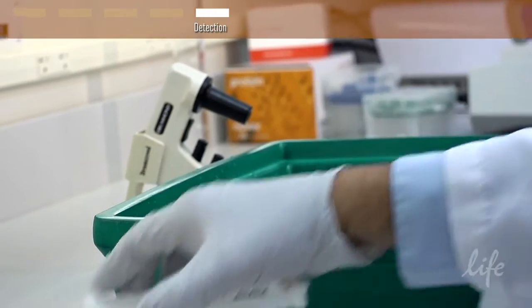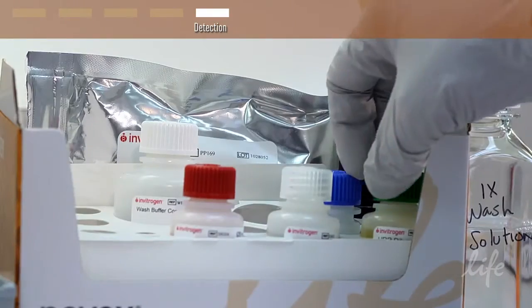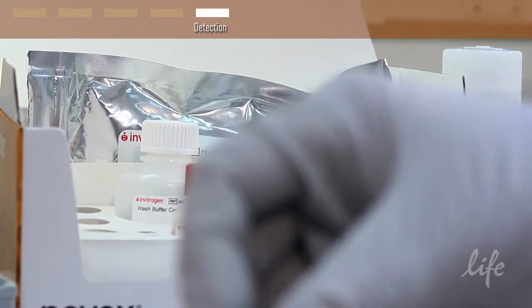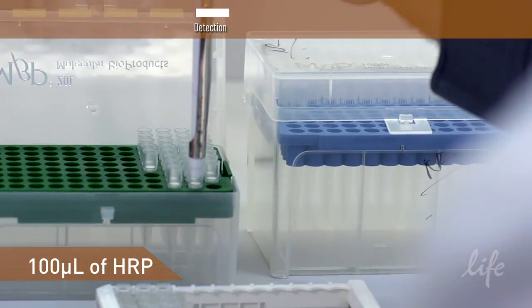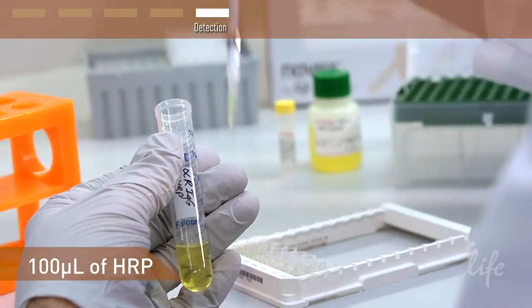Next, remove the detector antibody and repeat the wash cycle. Prepare the streptavidin horseradish peroxidase working solution. Then add 100 microliters of the HRP solution to each well containing sample or standard.